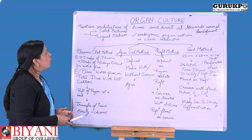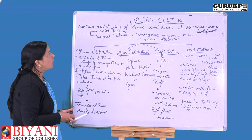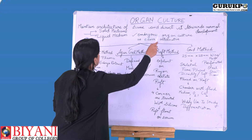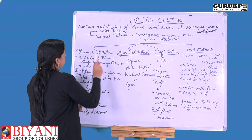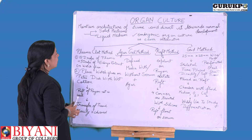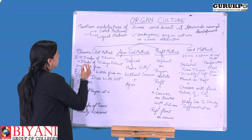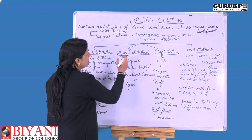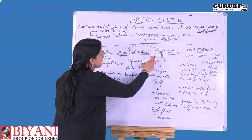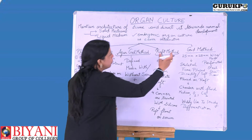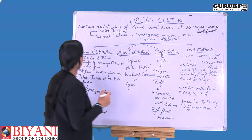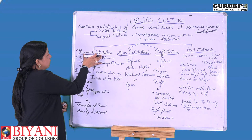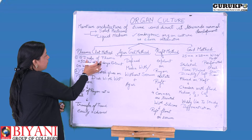For culturing organs in in vitro conditions, we can use four methods: first is the plasma clot method, second is the agar gel method, third is the raft method, and fourth is the grid method.